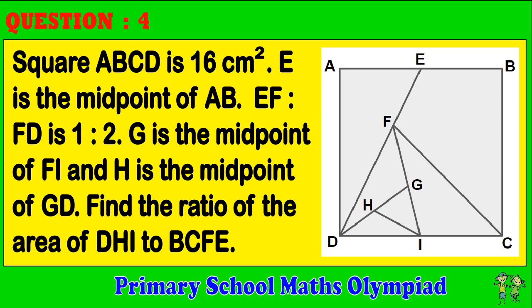Question 4. Square ABCD is 16 centimeters squared. E is the midpoint of AB. EF to FD is 1 to 2. G is the midpoint of FI, and H is the midpoint of GD. Find the ratio of the area of DHI to BCFE.